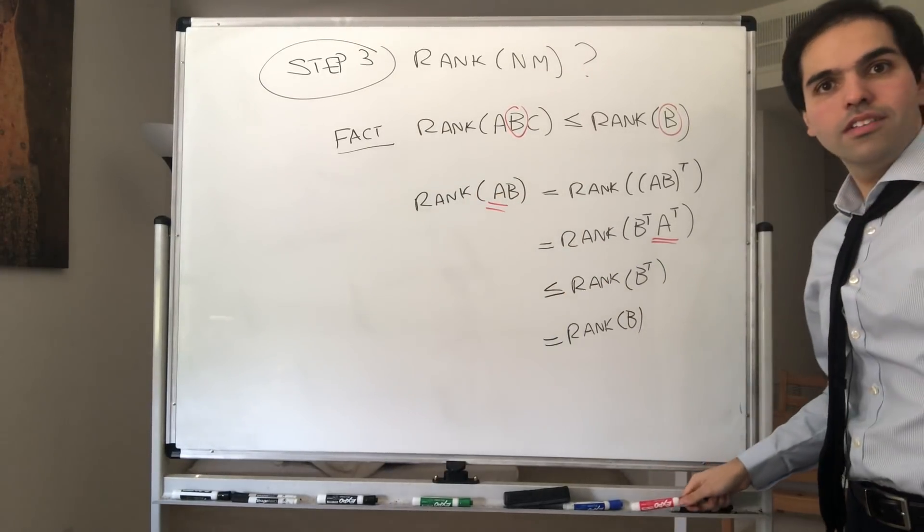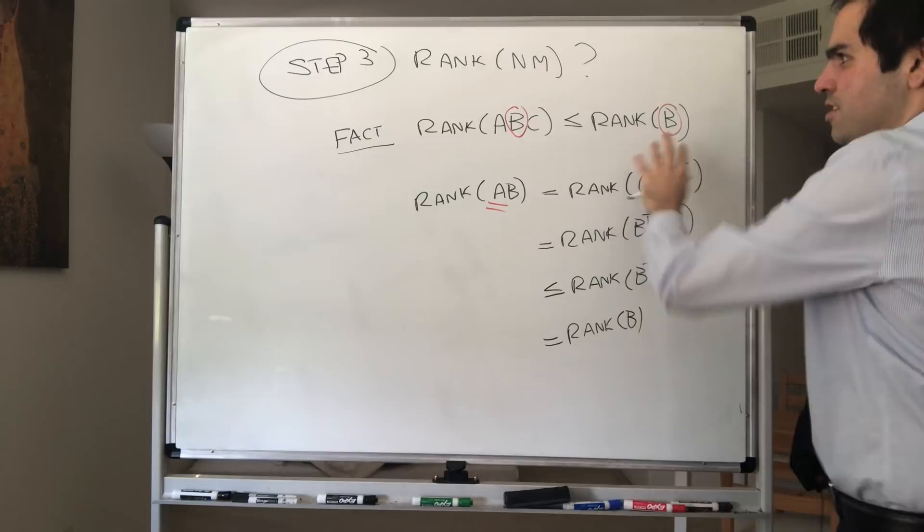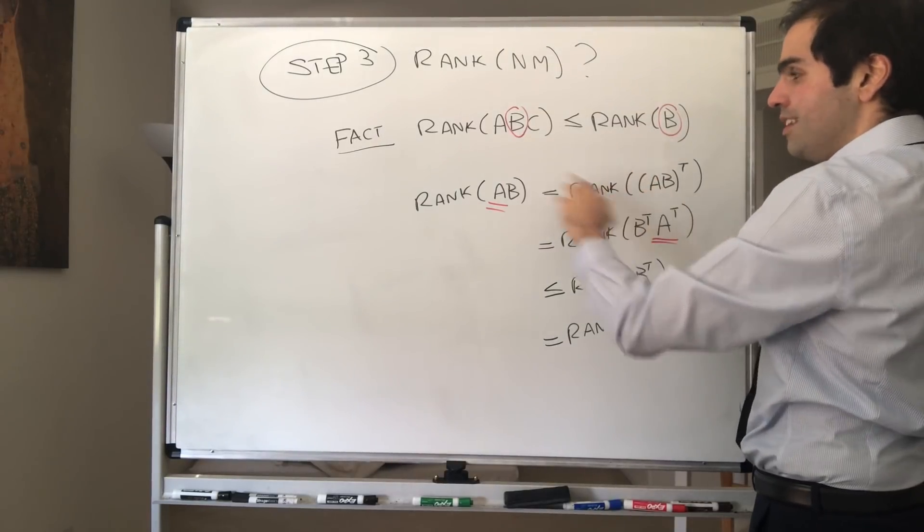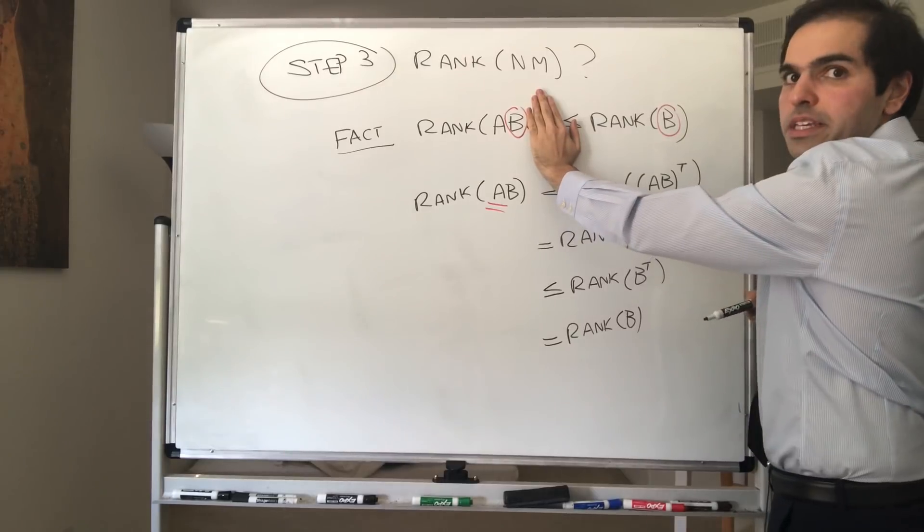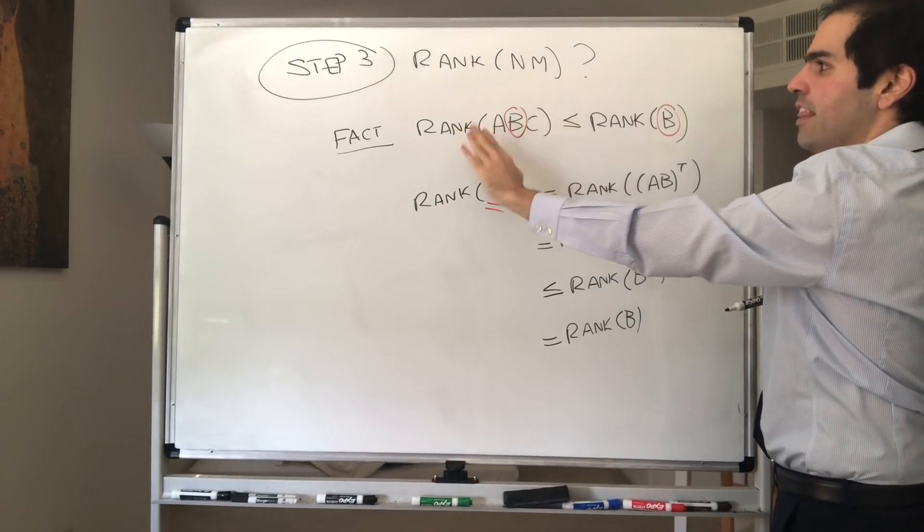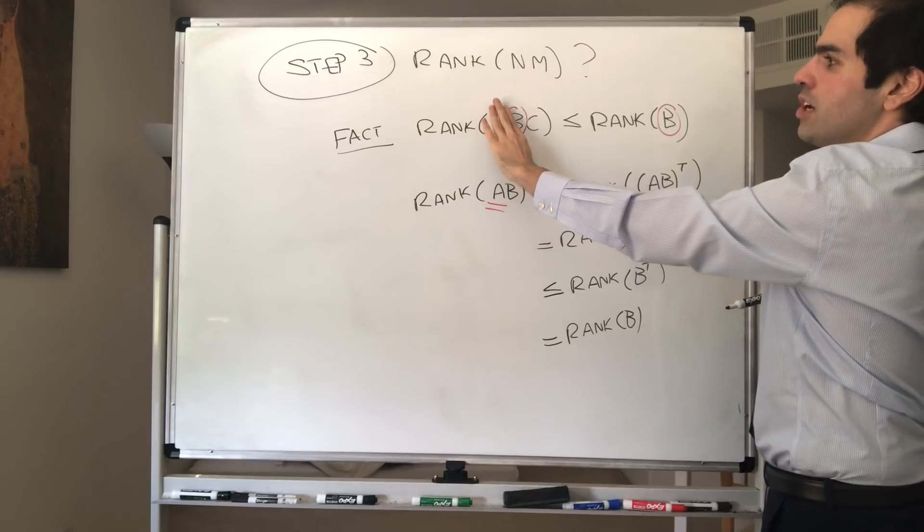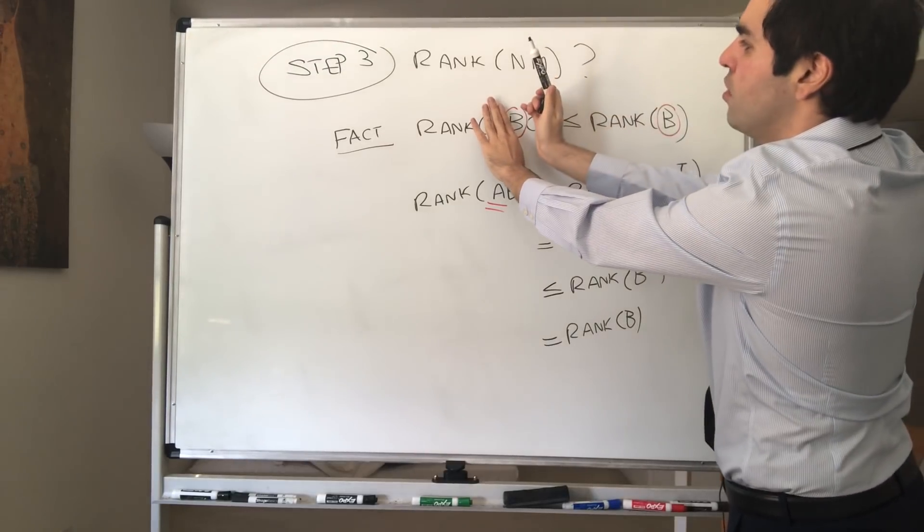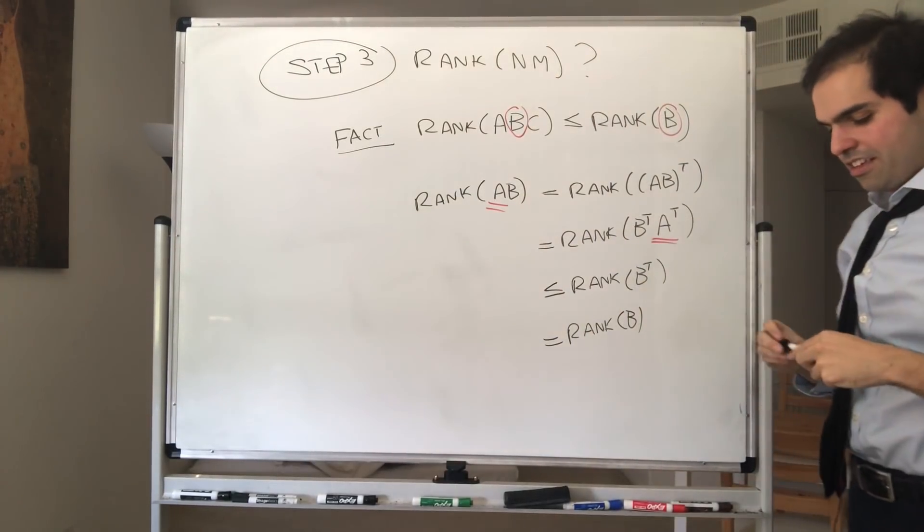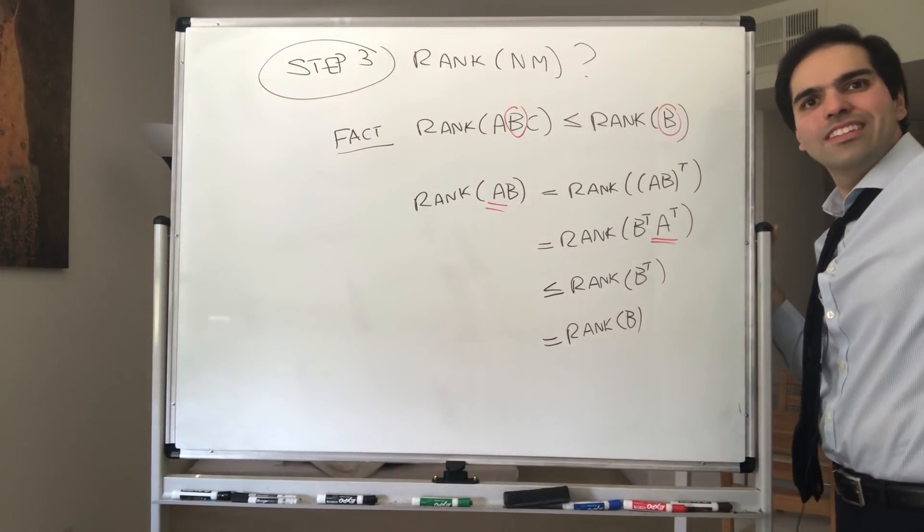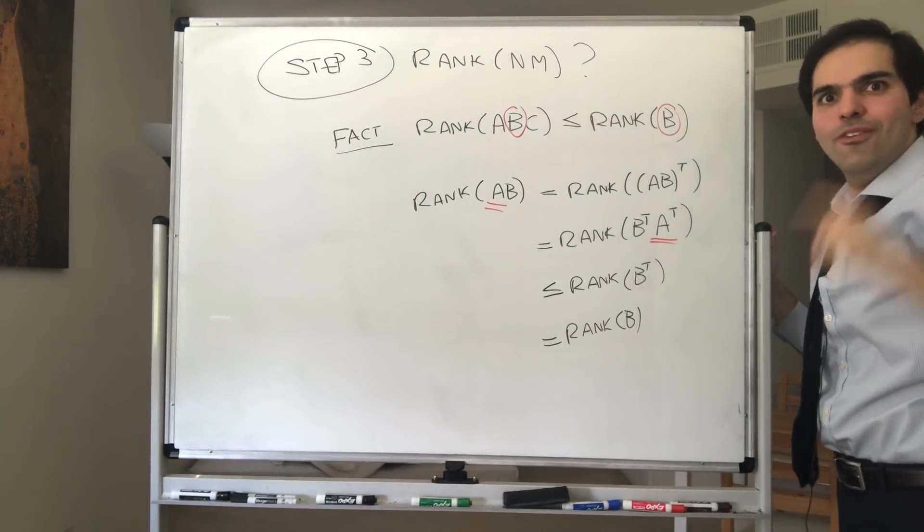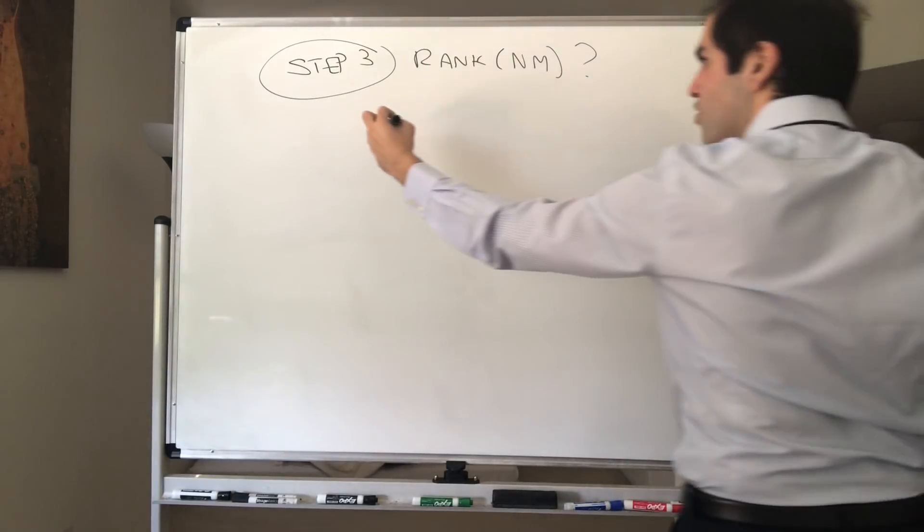And then if you want, the quick proof of this fact is, the rank of ABC is less than or equal to the rank of AB, because we're multiplying by C to the right. And then this becomes less than or equal to the rank of B, because then we're multiplying by A to the left. Now you're like, what in the world does that have to do with MN? Well, here's one. Because here's a beautiful thing.